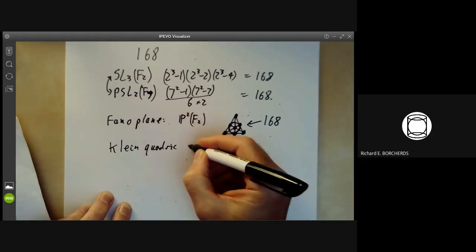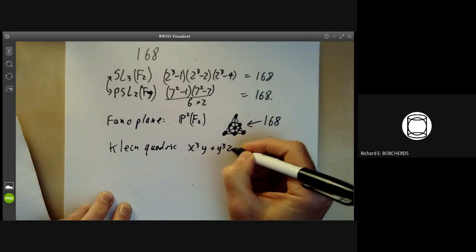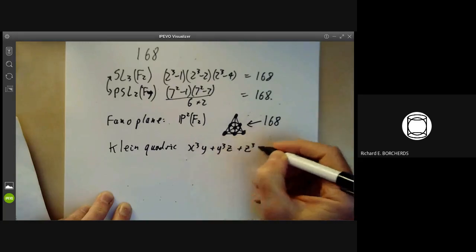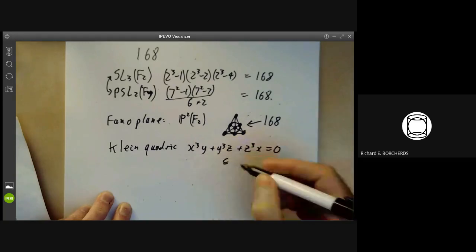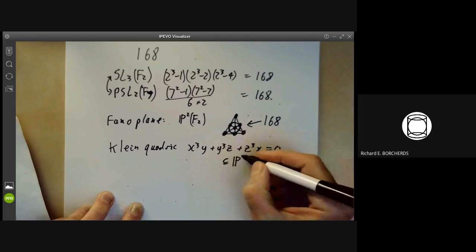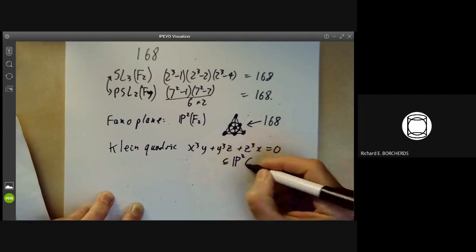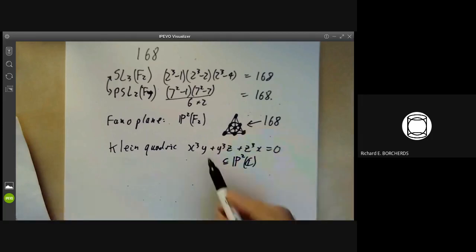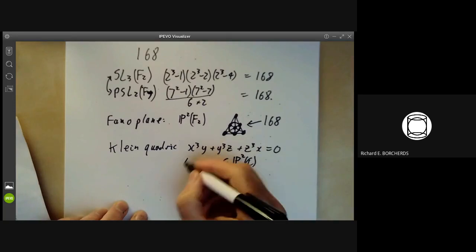Another way this group turns up is as the automorphism groups of the Klein quartic, which is X cubed Y plus Y cubed Z plus Z cubed X equals naught. So this is a quadric that means a degree four curve inside the two dimensional complex plane. And this quadric also has automorphism group of order 168, which isn't all that easy to see. You can easily see a subgroup of order 21, but getting the remaining automorphisms is kind of difficult.